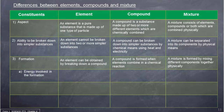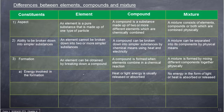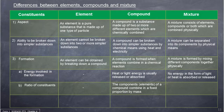No energy is needed for the formation of an element. Heat or light energy is usually released or absorbed during the formation of a compound. No energy in the form of light or heat is absorbed or released during the formation of a mixture. Elements do not have a ratio of constituents. The elements of a compound combine in a fixed proportion by mass. The substances in a mixture can be mixed in any proportion by mass.